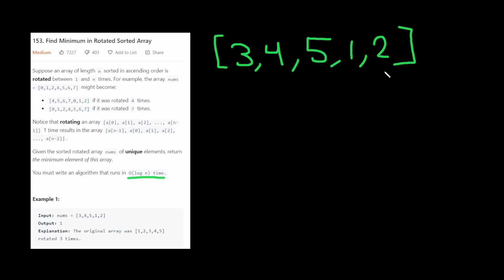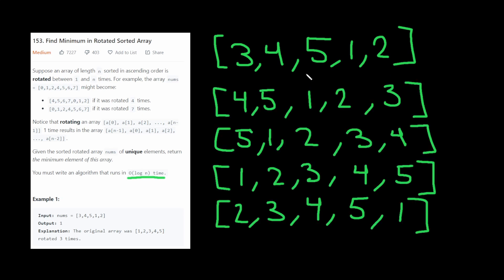First thing I would do is I would draw out all of the possible rotations of this input array. Okay, we have all possible rotations, and now we want to get the middle element for each one, just like a normal binary search. Now we need to figure out a way to cut up the array in half and continue going forward until we find the minimum element.